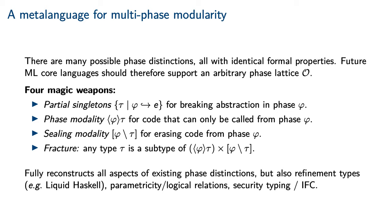The phase distinction between compilation and programming is but one of many possible phase distinctions, all of which have identical formal properties. Therefore, we advocate future-proofing ML core languages by indexing them in an arbitrary phase lattice O. There is type structure that corresponds to this phase lattice: we have partial singletons for breaking abstraction in a given phase; a phase modality for code that only exists in a given phase; a ceiling modality for erasing code from a given phase, which generalizes the way that sealed modules in Standard ML do not have any static component. One must also impose a correctness condition governing the interaction between these modalities, called fracture: any type tau can be reconstructed as a subtype of the product of its phase modality with its ceiling modality. This language reconstructs all semantic aspects of existing phase distinctions, as well as refinement types as found in Liquid Haskell, parametricity and logical relations, and security typing or information flow control.